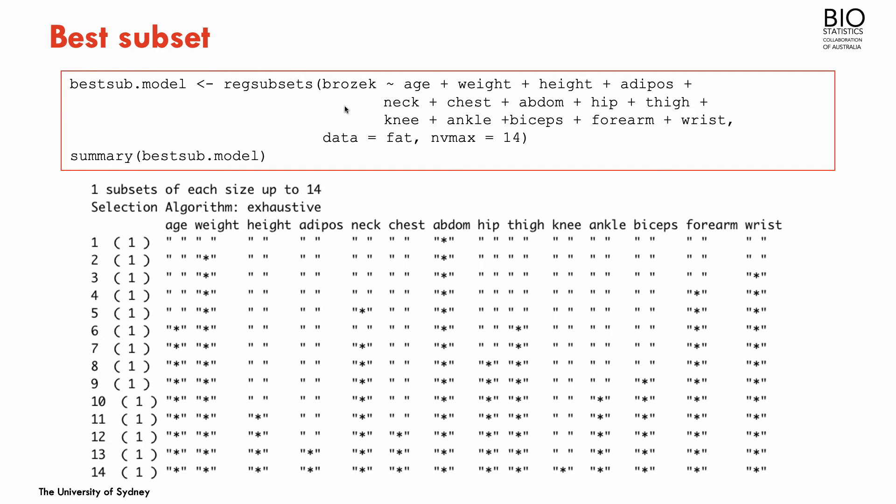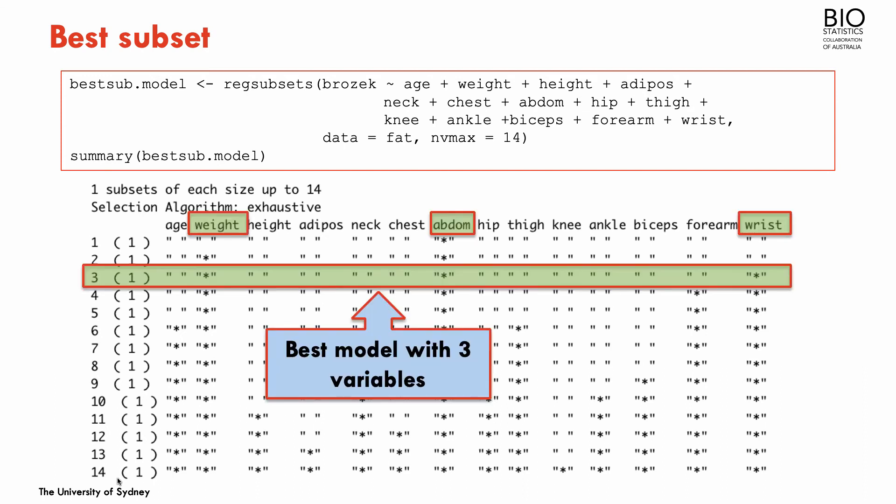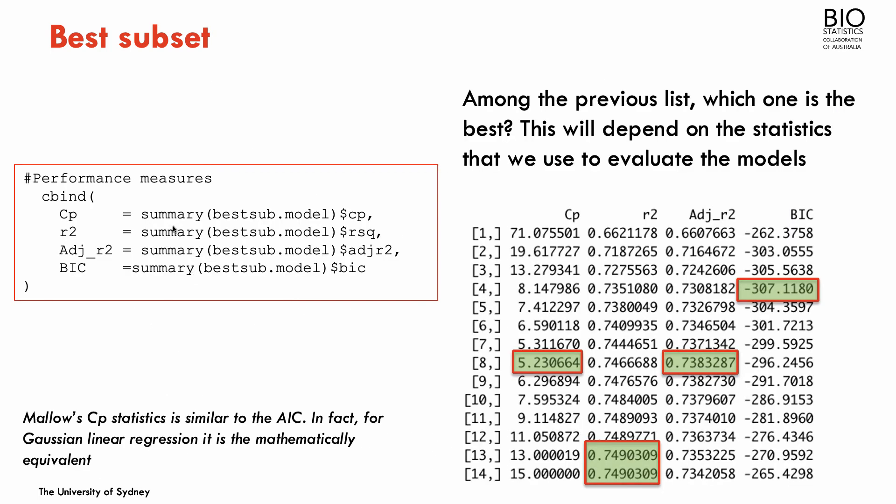And when I run the linear models with the regsubsets function, as I said, this function is going to fit all the possible combinations of these predictors and will give, as a result, the best model with one predictor, the best model with two predictors, the best model with three predictors, the best model with four predictors, up to the only model with all the predictors. So you see here, for example, the best model with three predictors includes the predictors weight, abdomen, and wrist.